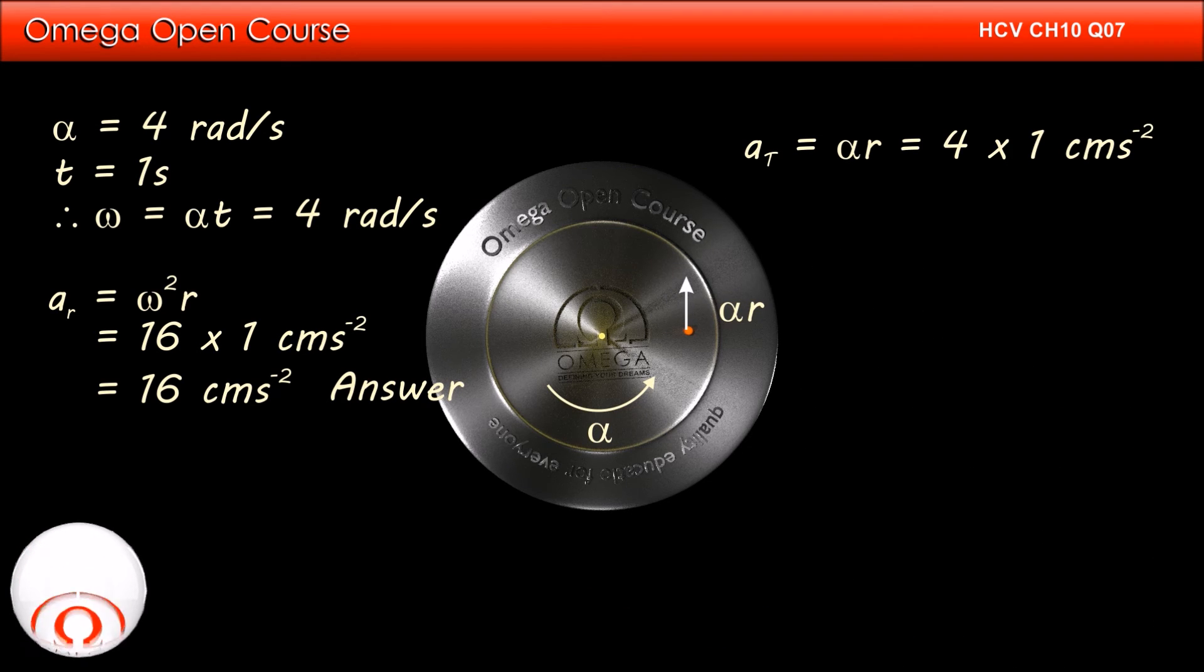Putting the values, we get tangential acceleration equal to 4 × 1 or 4 cm per second square. This is the answer to the second part of the question.